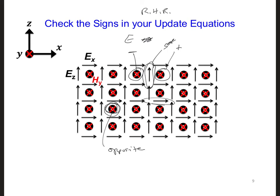So the EZ to the right of this HY, this one right here, needs to have a plus sign in front of it. The EX below also needs to have a plus sign in front of it. And then the EZ to the right and the EX above are pointing in the opposite direction that we want to sum, so these should have a minus sign.